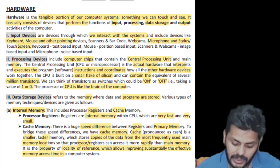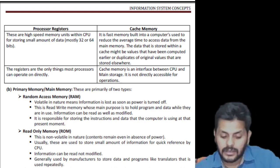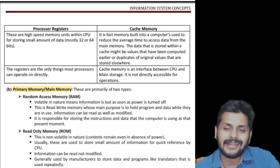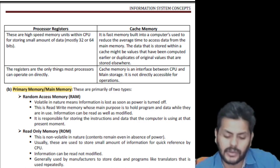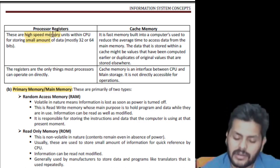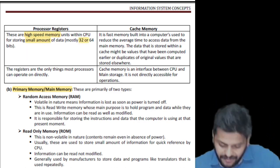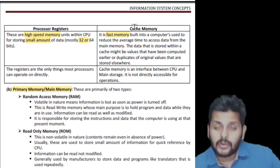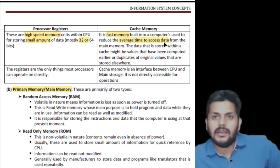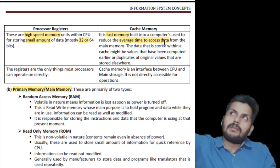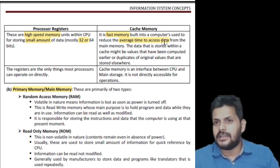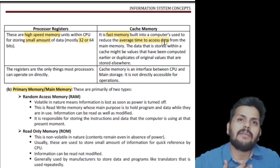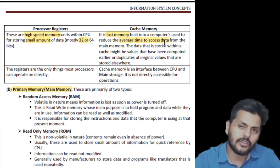After internal memory, we have primary memory. Registers are high-speed, very small, storing small amounts of data — mostly 32 or 64 bits. Cache memory is a fast memory built into the computer to reduce average time taken to access data. Cache memory is an interface between the CPU and main storage — it is not directly accessible for operations.